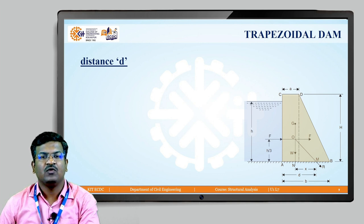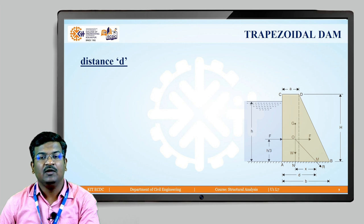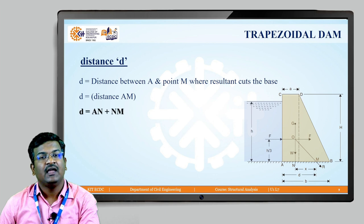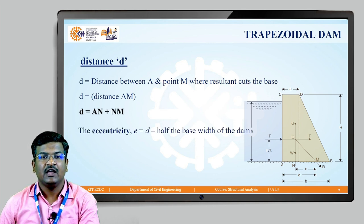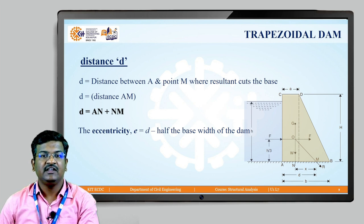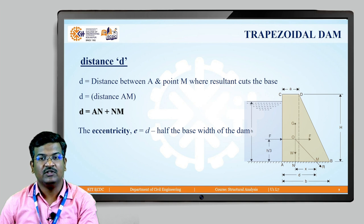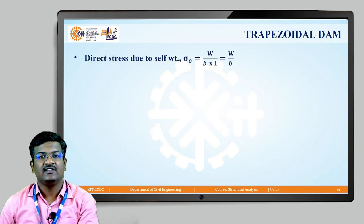After finding AN, we determine the D distance — where the resultant cuts the base between the toe and heel. AM (which equals D) = AN + NM. The eccentricity e = D − b/2.